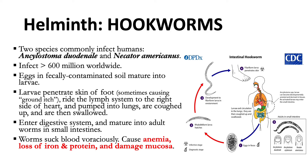From the lungs, the larvae ascend to the bronchial tree, to the pharynx, and are then swallowed. The larvae reach the jejunum of the small intestine, where they reside and mature into adults. Adult worms live in the lumen of the small intestine, typically the distal jejunum. Because the small intestine is very vascular, when they attach to the intestinal wall this results in blood loss, causing anemia, loss of iron and protein, and damaged mucosa. Most adult worms are eliminated in one to two years, but this may extend to several years.